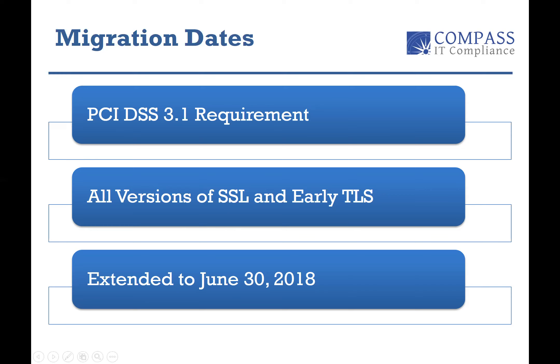All versions of SSL and early TLS get an extended migration deadline to June 30th, 2018. This was a very important issue raised in PCI 3.1, where the original date was June 30th, 2016. There was enough pushback that the council extended it to 2018. However, that does not mean you can sit on your hands until 2018. Moving away from SSL and TLS 1.0 is still a requirement. If you're still running those in your environment, you'll be expected to have a migration plan in place, and any QSA doing a ROC or risk assessment is going to ask what your plan is to migrate off of these.